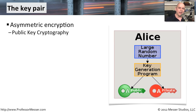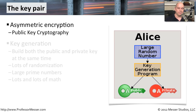You're going to provide people with a public key, and you're going to use that to encrypt data that they'll send to you — data that you'll decrypt with a completely different key. Because there are two keys involved, it's asymmetric encryption. If we were using the same key to encrypt as we were using to decrypt, we call that symmetric encryption.